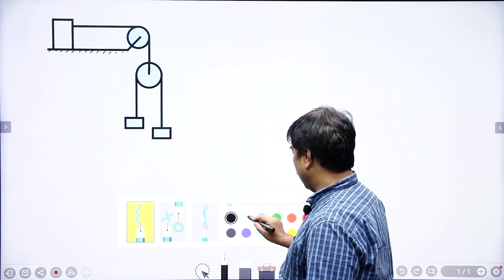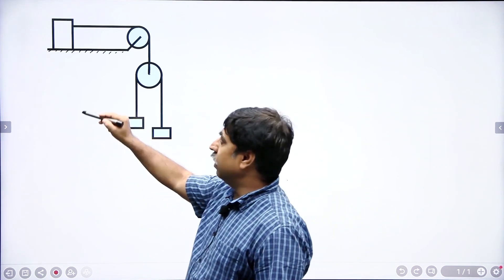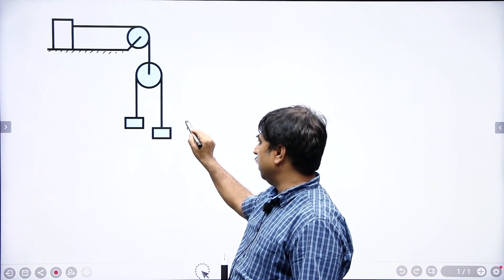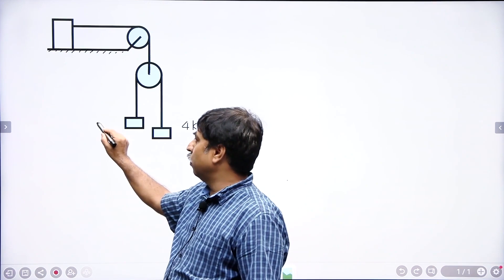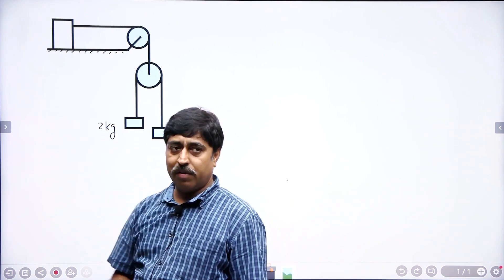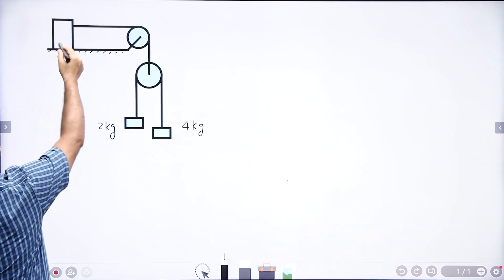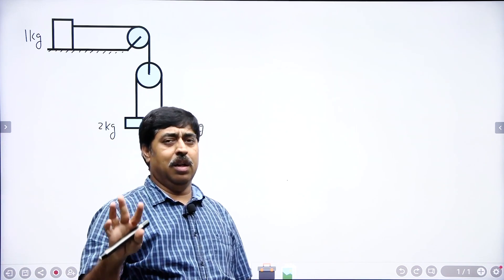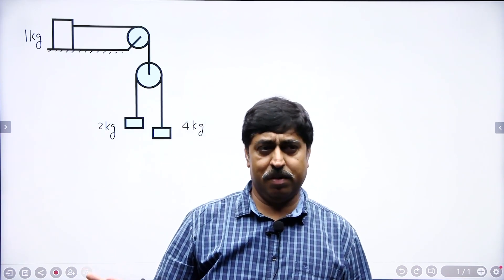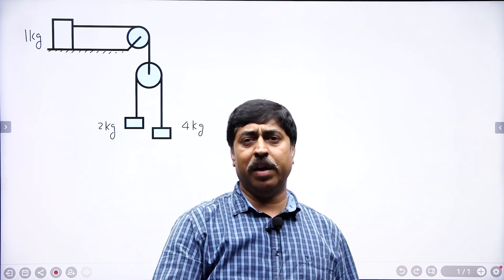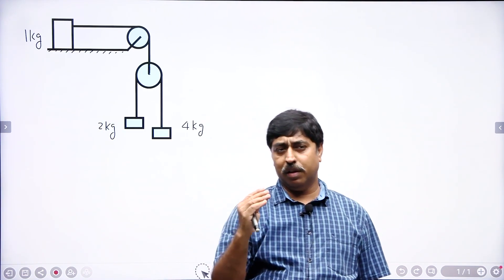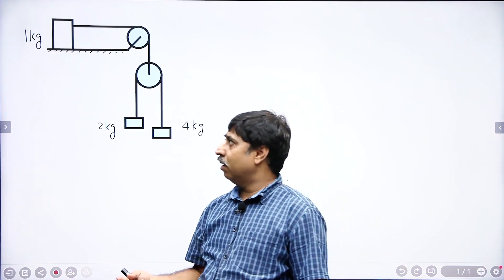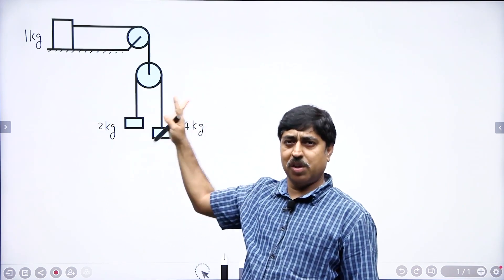Let us give this problem a proper shape. Let us say that this table is smooth, this block has a mass of 4 kg, this block has a mass of 2 kg, and let us assume that this block has a mass of 1 kg. All pulleys are ideal — they are massless. Strings are also ideal — they are massless as well as inextensible. The question asks you to find the acceleration of this block, or this block, or this block.